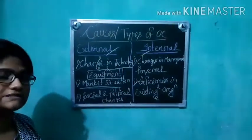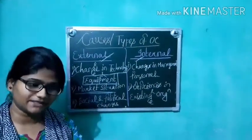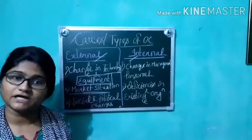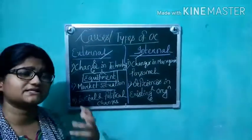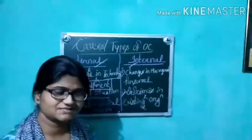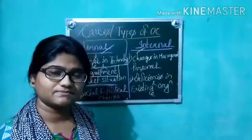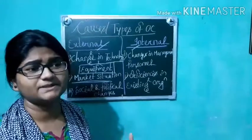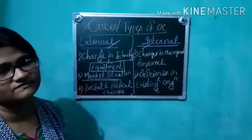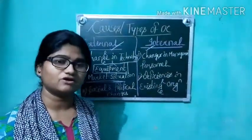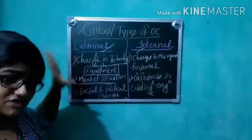The third external factor is social and political changes. When the government changes, organizations have to adopt and adapt to all those kinds of changes. These three factors — technology, market situation, and social/political changes — make up the external pressure types.